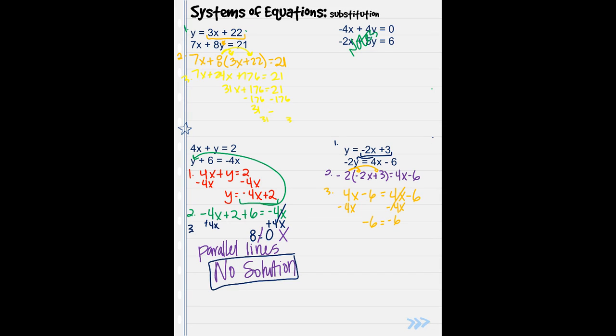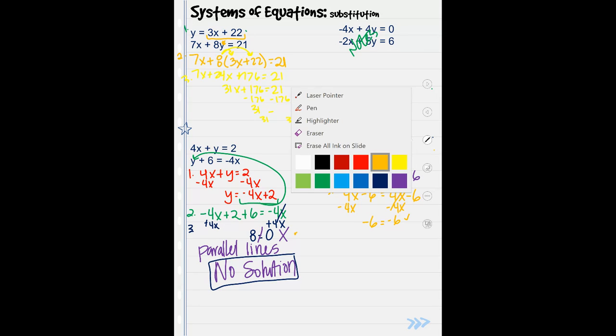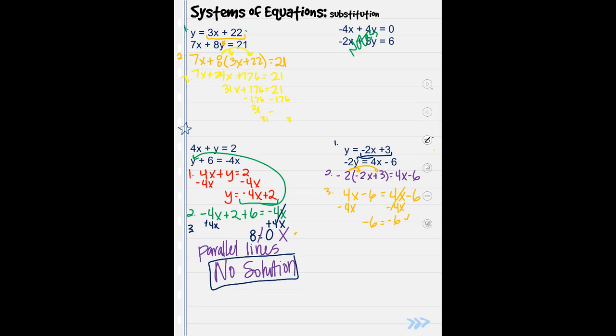We're left with negative 6. That's kind of like this last problem we did, but instead of not equaling, they equal this time. Again, we didn't do anything wrong. They do equal each other. When our variable drops out and they equal each other, then that means we're dealing with the same line. Remember, the same line means they're dependent and there is infinite many solutions. Because at every single point they are intersecting.